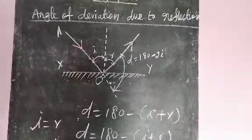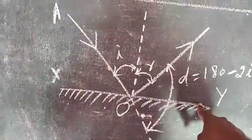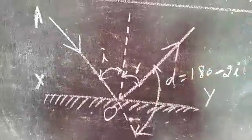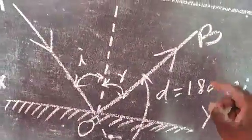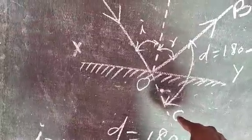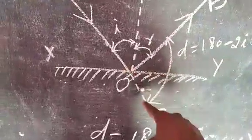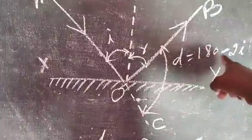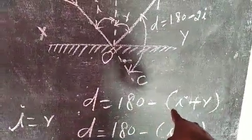Angle of Deviation due to Reflection. Here, XY is a plane mirror. AO is the incident light, OB is the reflected light, and OC is the undeviated light which continues along the direction of the incident ray. The angle between OB and OC is the angle of deviation D. The angle of deviation D equals 180 degrees minus the sum of the angle of incidence and the angle of reflection — that is, D equals 180 degrees minus (I plus R).